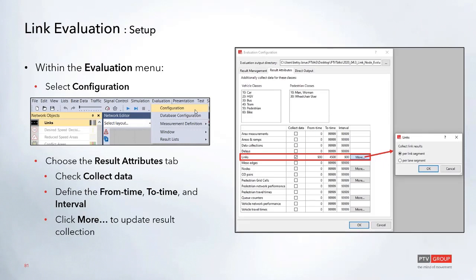To turn on evaluation collection, go to Evaluation Configuration and the Results tab. This is where you check 'collect data for links' and set the from and to time. The from time is useful if you have a warm-up period you don't want included in the evaluation measures. You can also set up different intervals to break up the evaluation into different buckets.